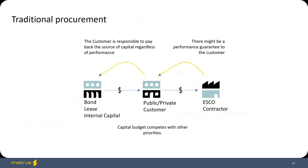Traditionally, capital procurement has looked like this: the customer looks to some source of funding — whether that's a bond, a lease, debt, or internal capital — and then contracts directly with an ESCO or contractor for the improvement they're looking at. In some cases, there's a performance guarantee back to the customer stating it's actually going to deliver what it promises. But no matter what, the customer is always responsible to pay back the source of capital, regardless of the performance of the project. For a lot of public entities, this is very similar to performance contracting. The performance guarantee is typically less than 100%, and that structure dates back to the 1970s with little evolution since then.